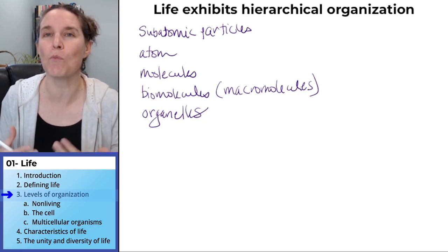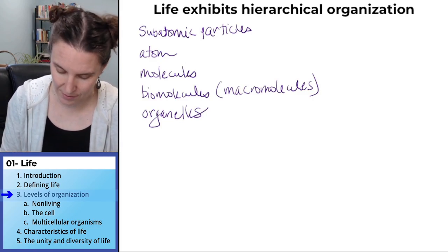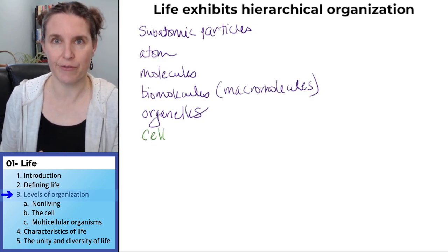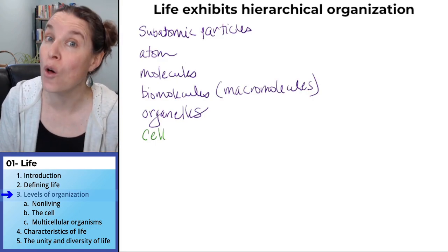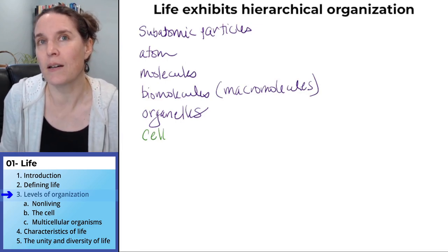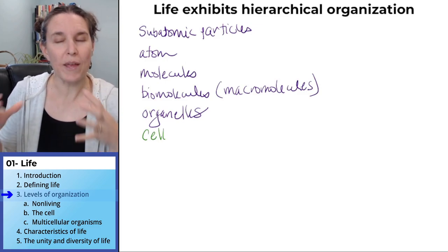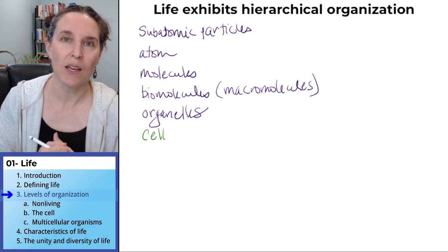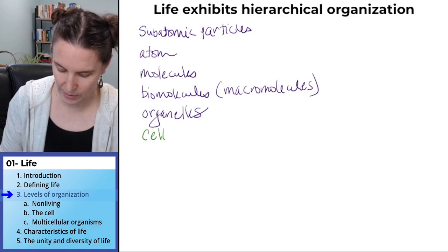Do you see how we're getting more complex? Organelles are used to build cells. This is the point where we now have life. Before this, we don't have all the characteristics of life, but once we reach the level of the cell, we are now in a living thing, even if it's just one little cell. When many different kinds of cells work together for a common purpose, we get a tissue.